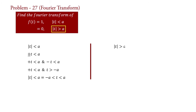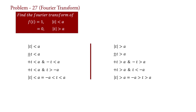Similarly, |t| > a means ±t > a, that is +t > a and −t > a, giving t < −a. So |t| > a means t > a or t < −a. Hence our function is defined as f(t) = 1 for −a < t < a, and f(t) = 0 for t > a or t < −a.